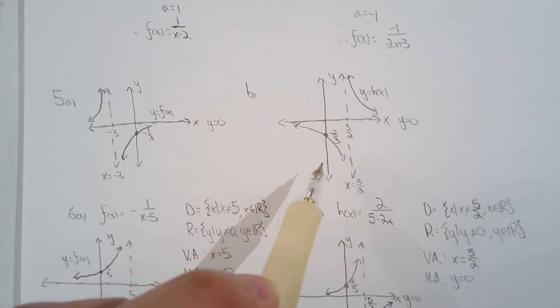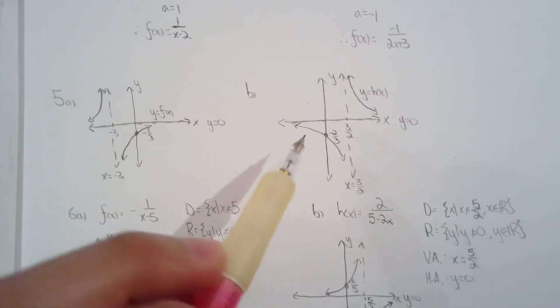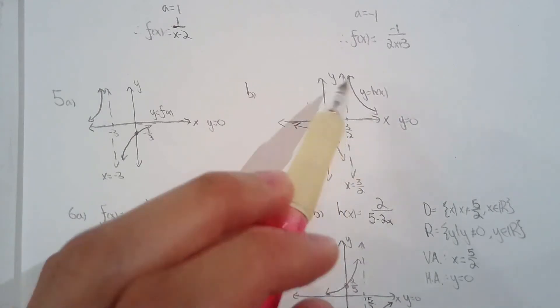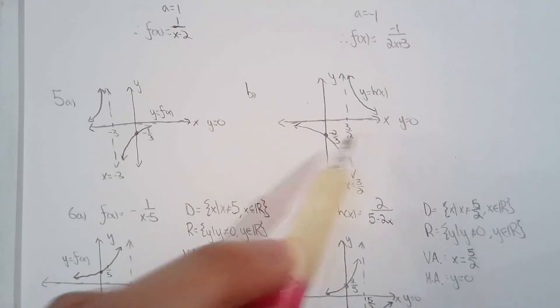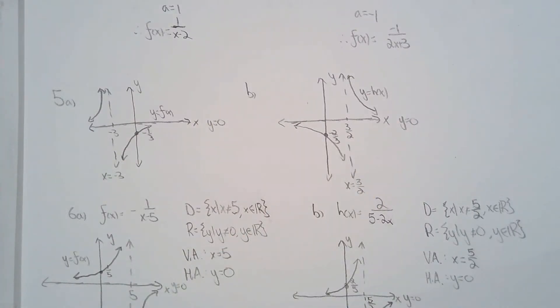There's only one possible function, one possible graph that will fit the criteria of the asymptotes and the y-intercept. So that's how I did 5a and 5b. And just a quick reminder, it only works because I know that there are no x-intercepts.